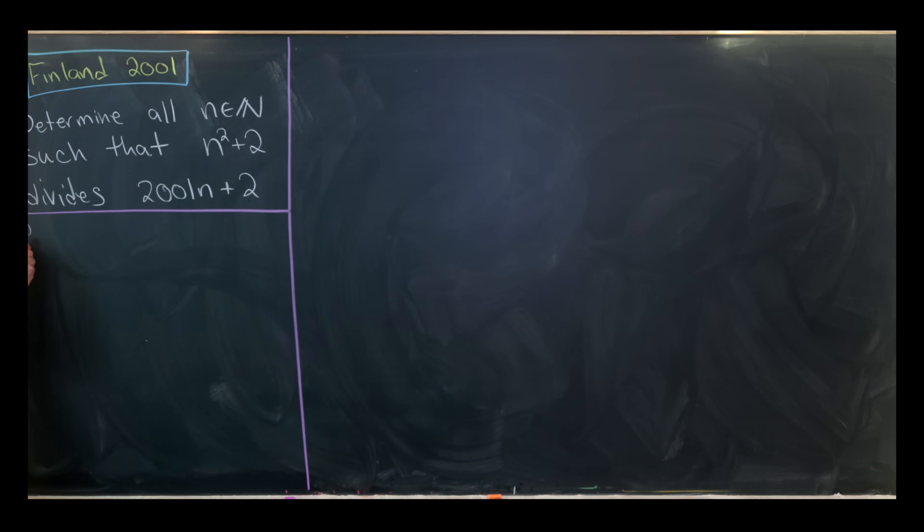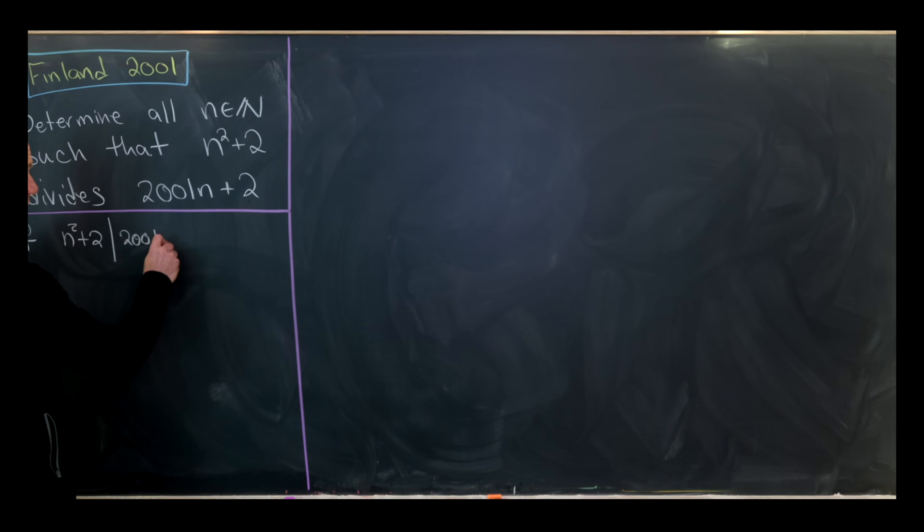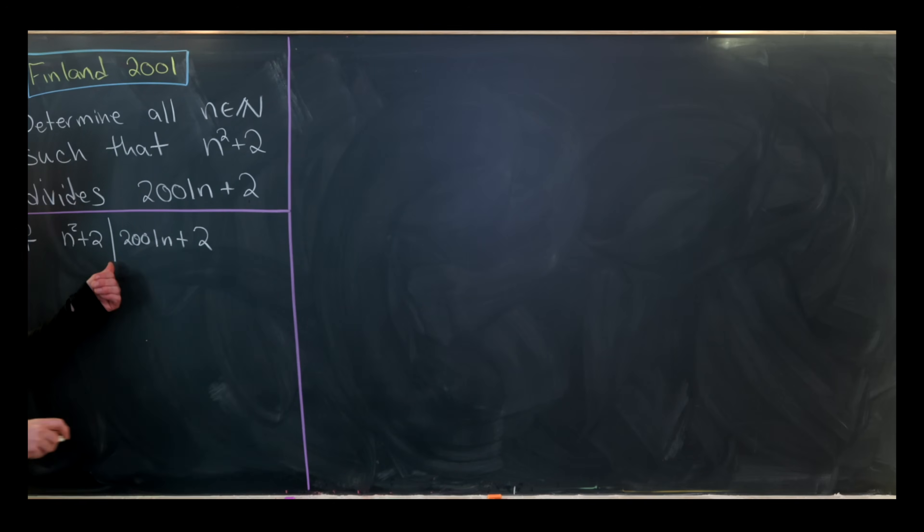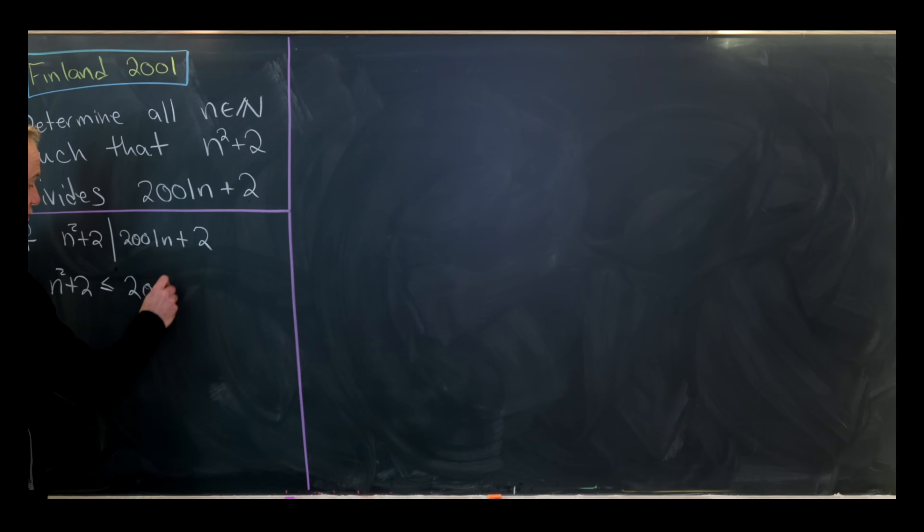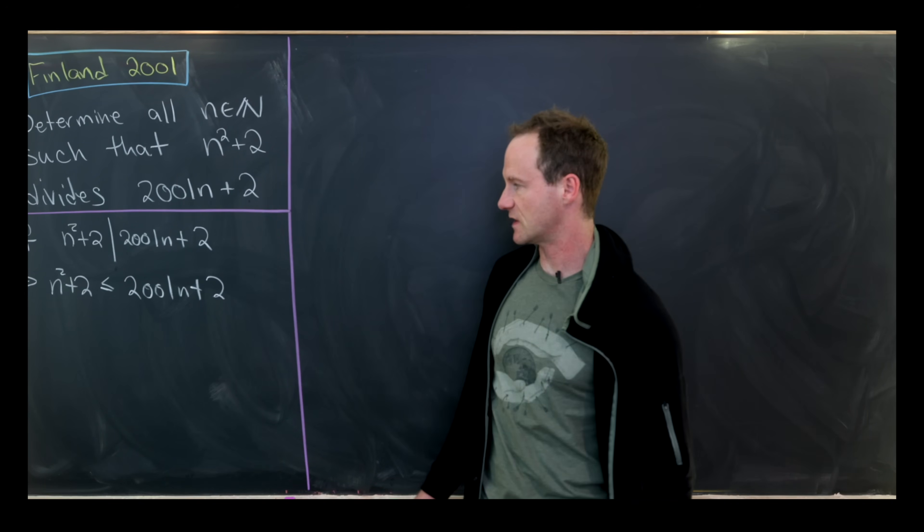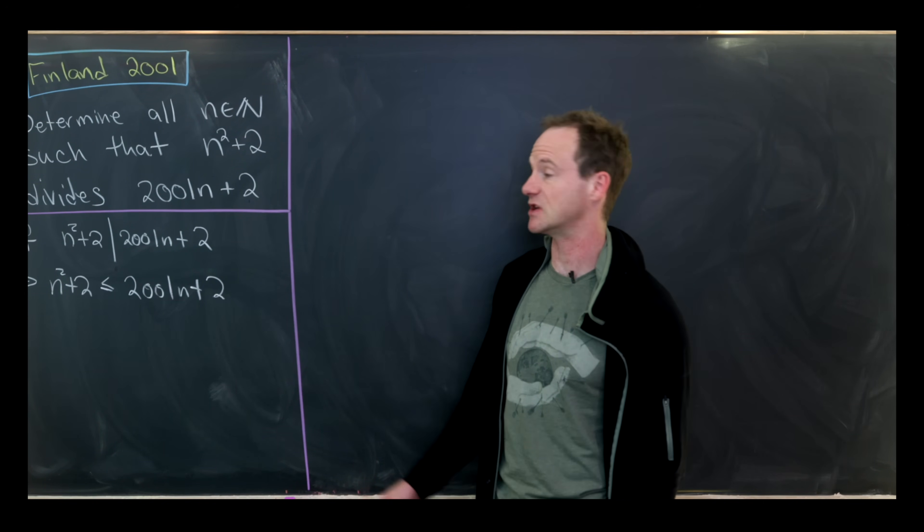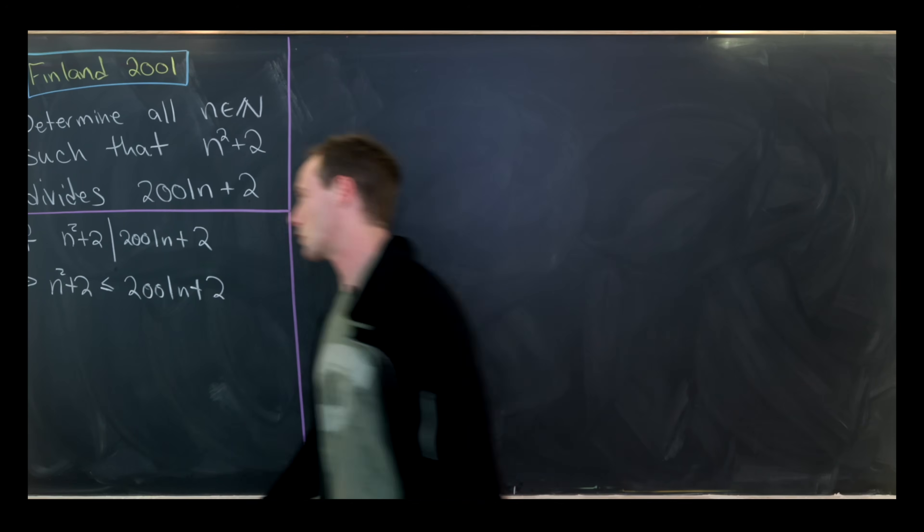Let's notice that if n² + 2 divides 2001n + 2—that's the notation for divisibility, this vertical line—then we see that n² + 2 must be less than or equal to 2001n + 2. Because if you're inside the natural numbers and you have a divisibility condition, that divisibility condition implies an inequality.